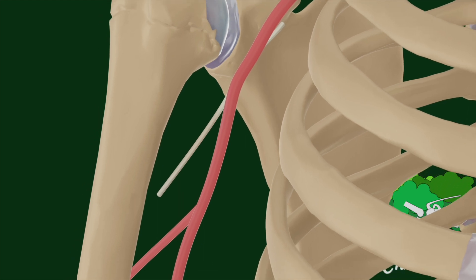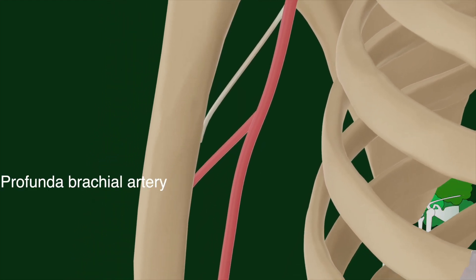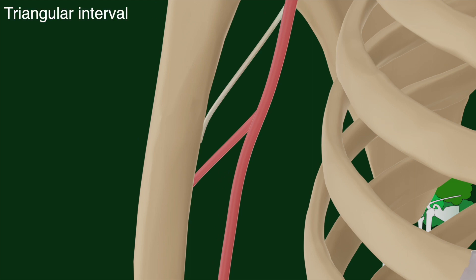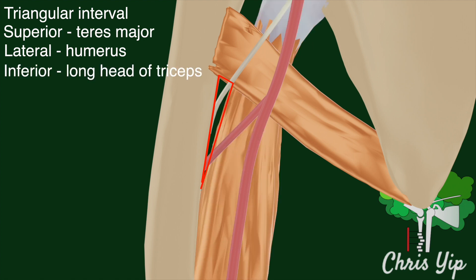It then moves to behind the humerus with the profunda brachial artery, at a site called the triangular interval, which is bounded superiorly by the teres major, laterally by the humerus, and inferiorly by the long head of the triceps.